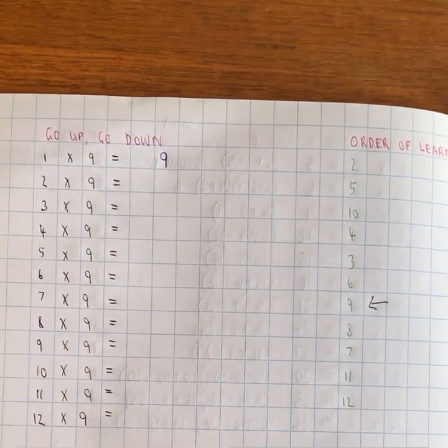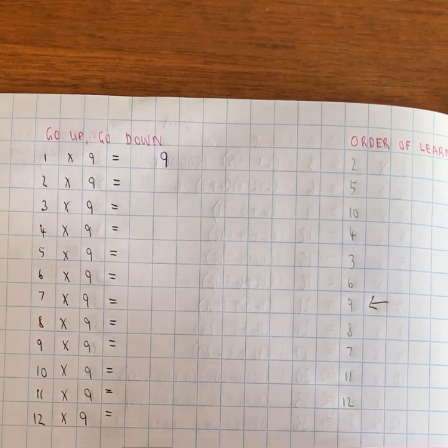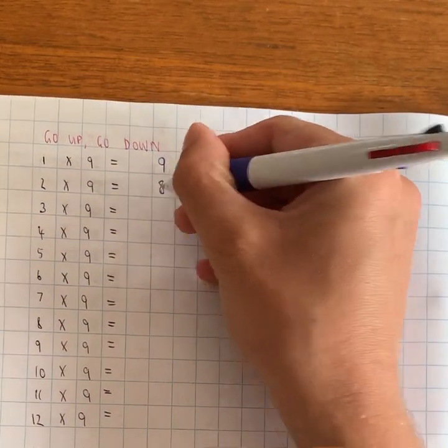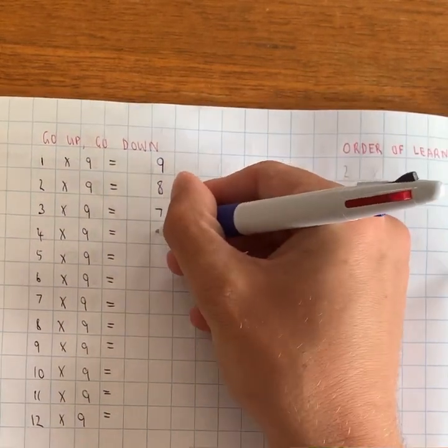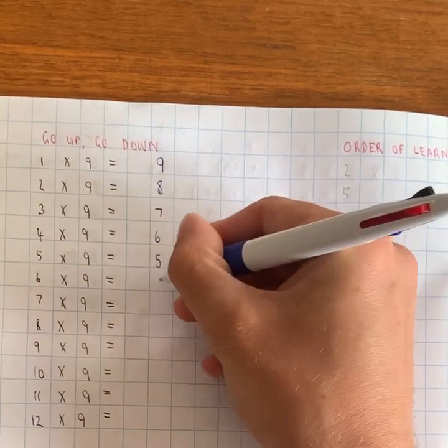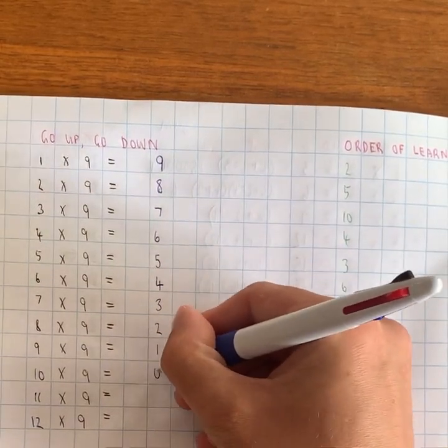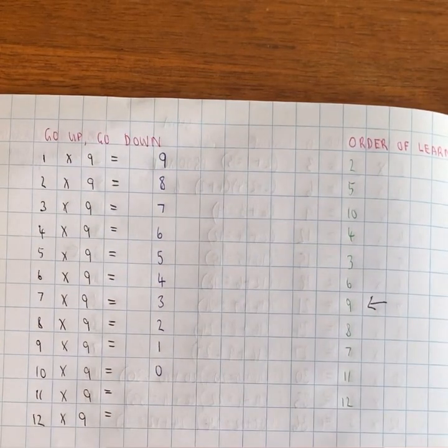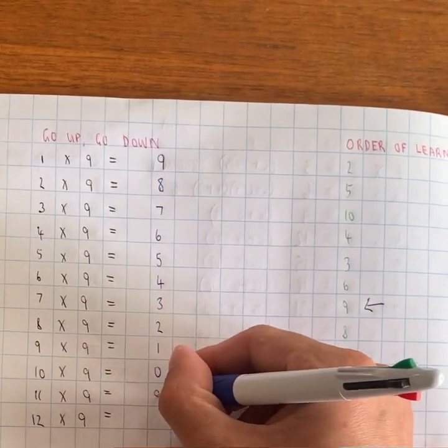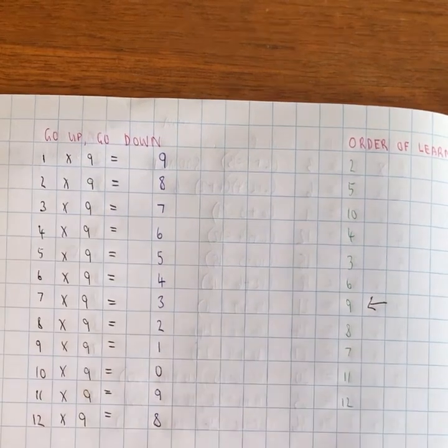And what I'm going to do is I'm going to start counting down. I've got nine, eight, seven, six, five, four, three, two, one, zero. Once I get to zero, I'm going to start back at nine, nine and then eight. Okay.